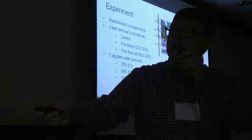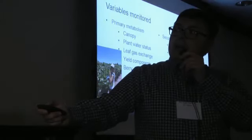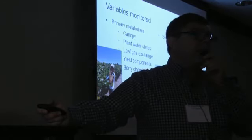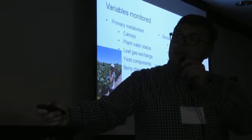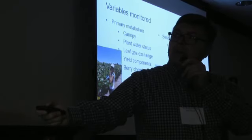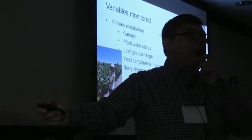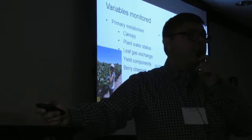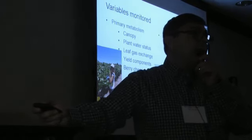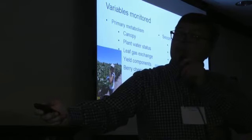We monitored many variables because growers are constantly asking about various services being sold to them. We measured canopy variables, plant water status, leaf gas exchange, yield components, and berry chemistry. For secondary metabolism, we focused on flavonols, anthocyanins, and proanthocyanidins. Growing degree day accumulation at the site was roughly 2,100 to 2,200 on a Celsius base, approaching 4,000 growing degree days on the Fahrenheit scale—quite warm.